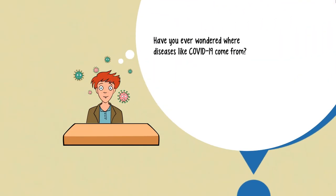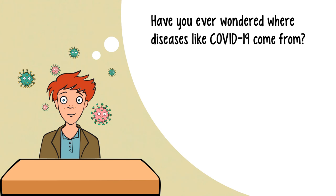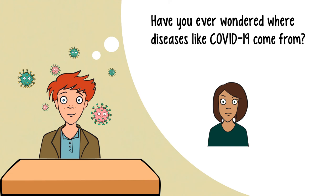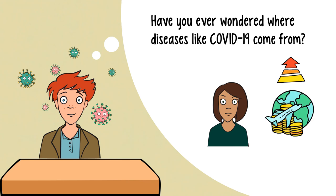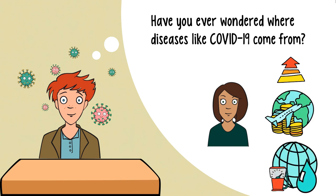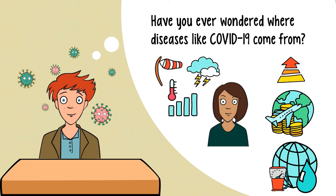Let's wrap it all up. If you have ever wondered where diseases like COVID-19 come from, now you know. In the end, it is us humans driving the emergence of new zoonotic diseases. We have grown in numbers, globalised trade and travel, and used Earth's resources unsustainably. All of this has us heading towards irreversible global crises, like climate change and pandemics.